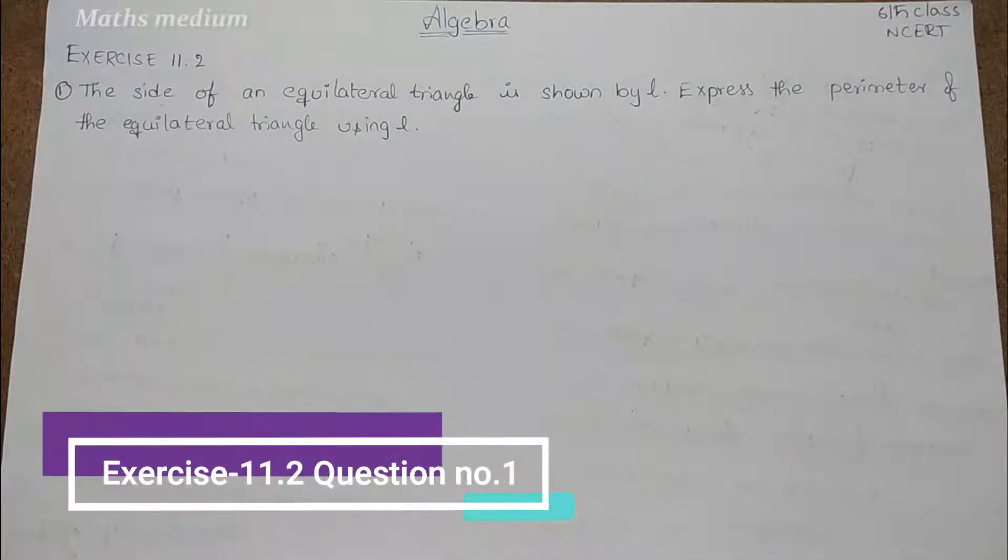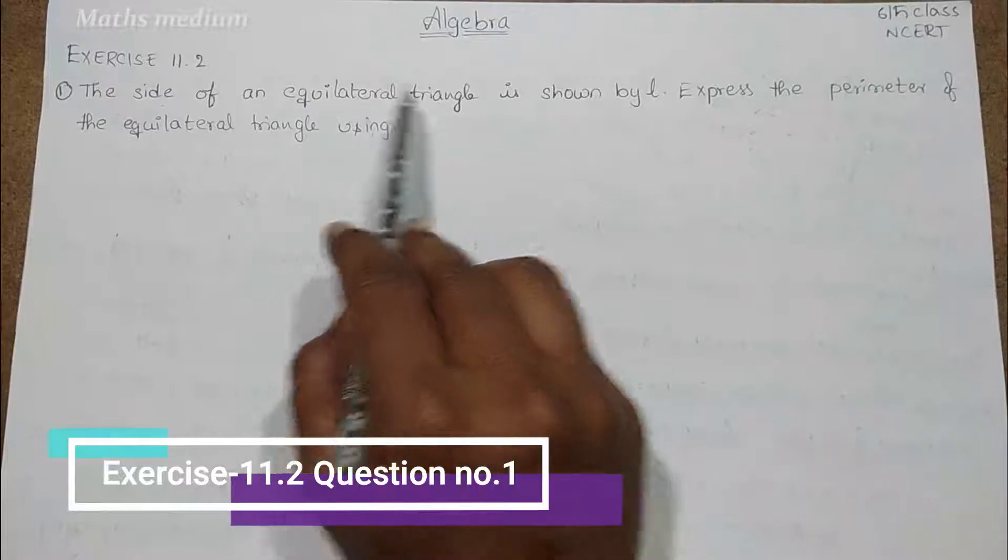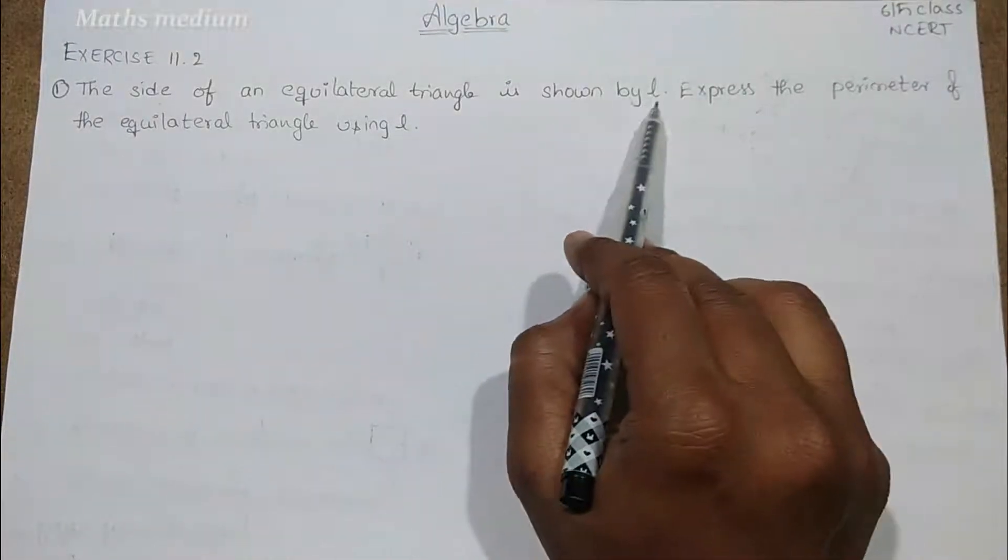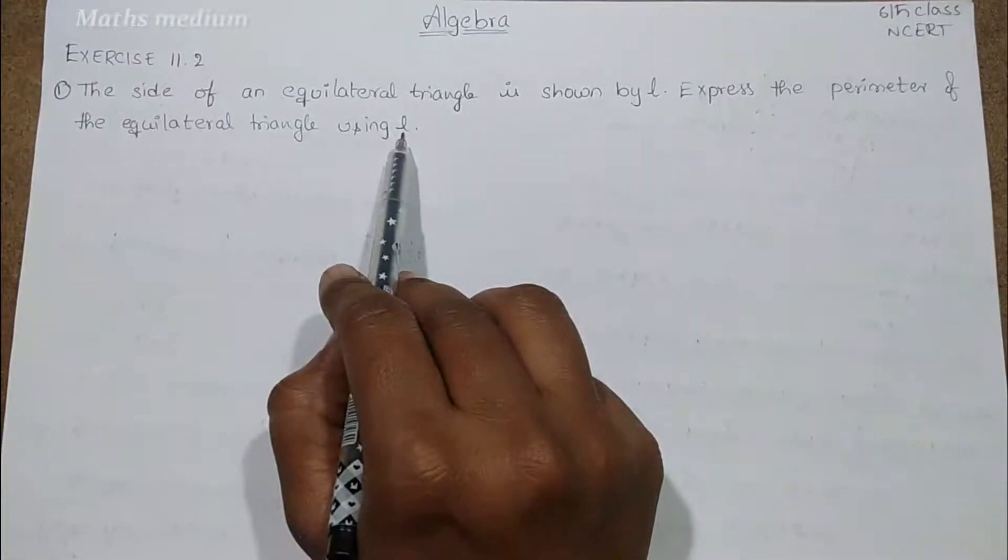Hi, hello, welcome to Maths Medium. Today I came with Exercise 11.2 from Algebra, sixth class NCERT, question number one. The side of an equilateral triangle is shown by L. Express the perimeter of the equilateral triangle using L.